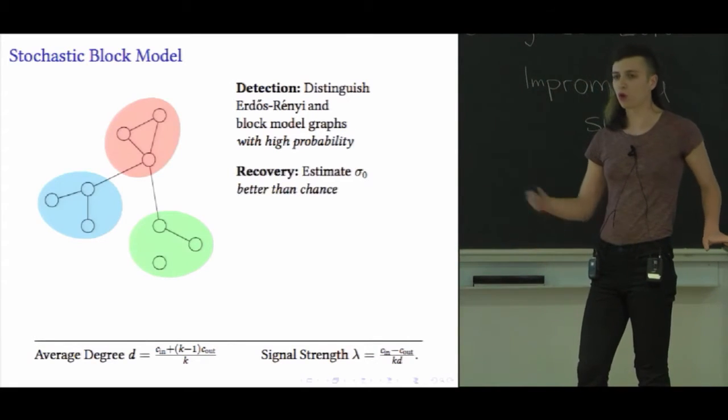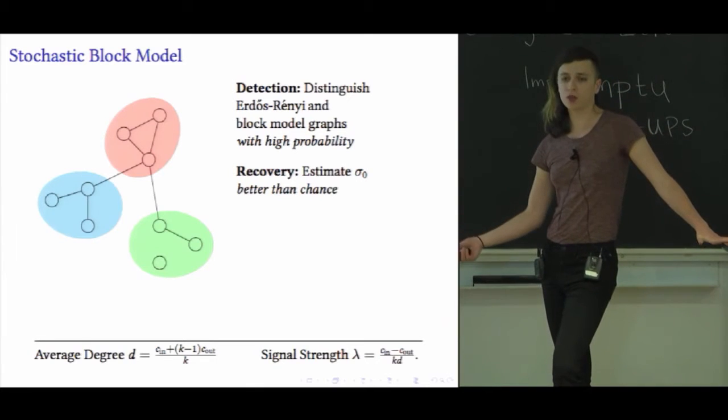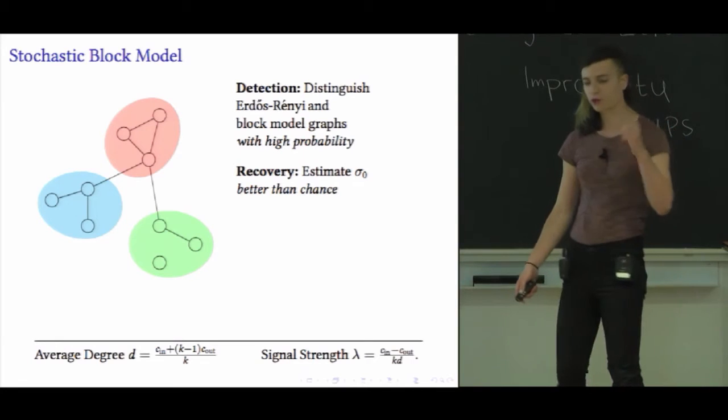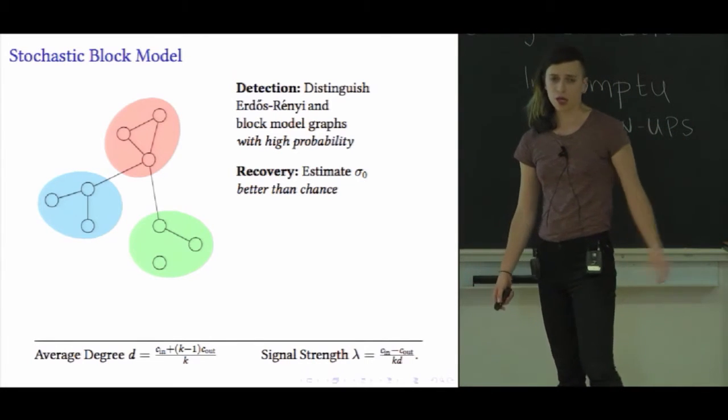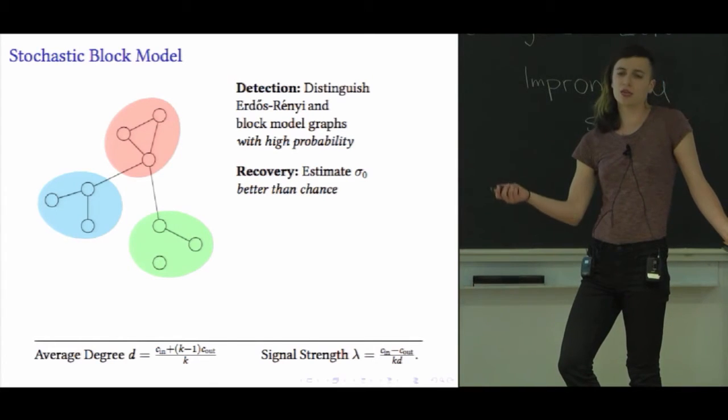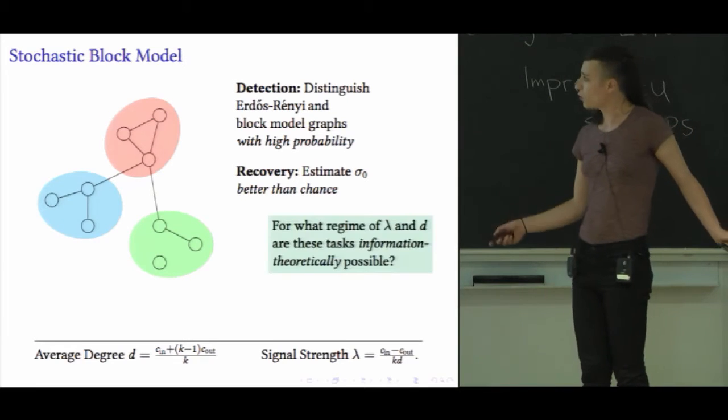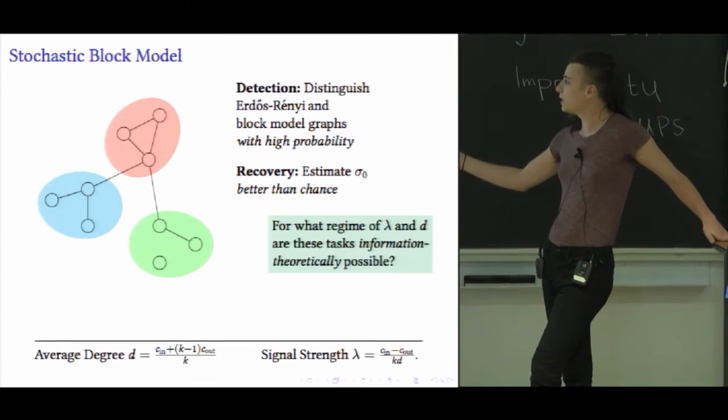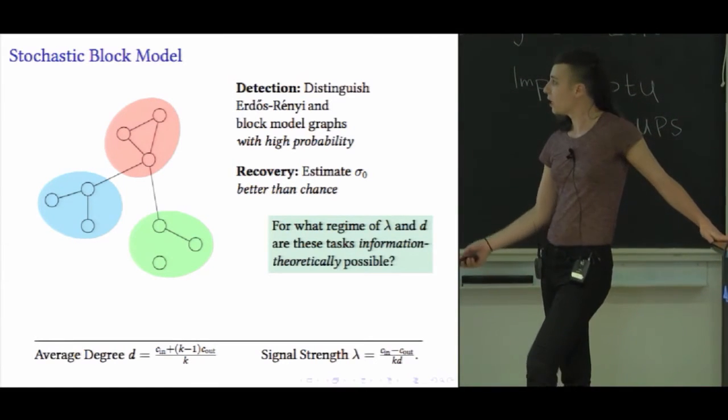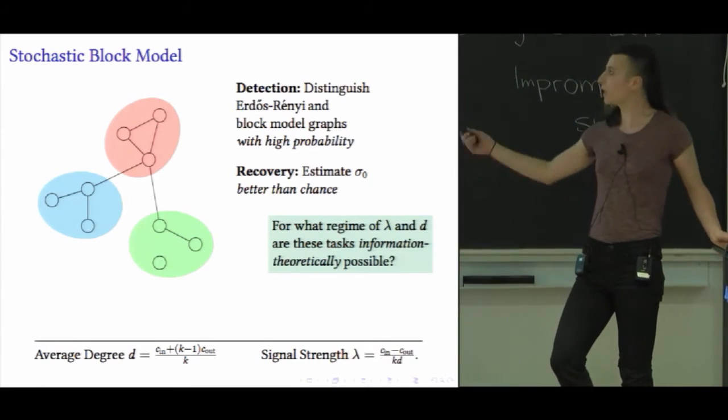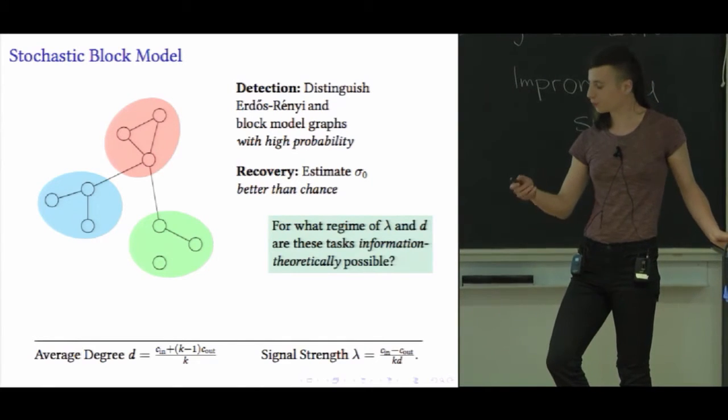The other task is more of a statistical inference task, where I want you to find the communities present in a network that I've promised was generated from the block model. For this one, all I want you to do is do better than chance, better than if you were assigning communities to nodes at random. The reason I only ask for better than chance is because when networks are this sparse, you can't do exact recovery at all. So the question is, as the number of nodes gets asymptotically large, for what regime of lambda and d are these tasks information theoretically possible? If you have infinite computation time, when can you even recover the structure at all?